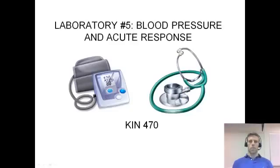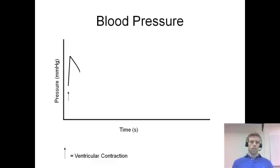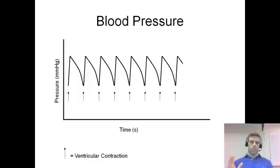This is laboratory number five. We're looking at blood pressure and the acute response. The first thing we're going to look at is a simple graph of pressure over time. We're going to see how the pressure changes based on each ventricular contraction. Each arrow represents a ventricular contraction, and when that occurs, we get a spike in blood pressure which gradually comes down, then another ventricular contraction occurs, and this cycle continues.